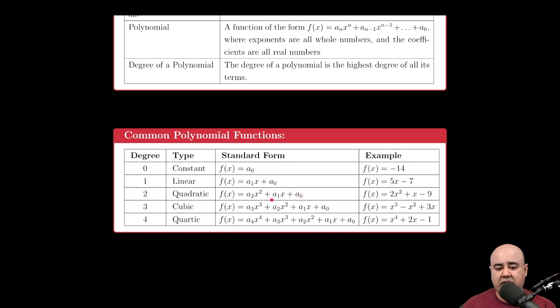You've seen before ax squared plus bx plus c. It's the same exact thing. A just gets replaced with a sub 2. B gets replaced with a sub 1. C gets replaced with a sub 0. Again, an example of this is 2x squared plus x minus 9. A sub 2 is 2. A sub 1 is 1. A sub 0 is negative 9.